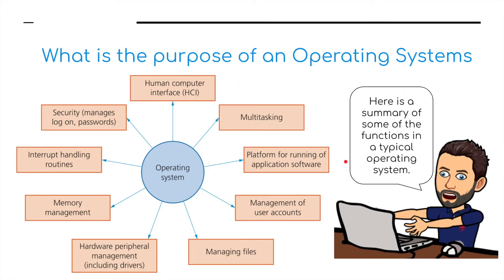So what is the purpose of the operating system? The operating system has many different tasks. First of all, it is a human computer interface — a way of linking the computer so a user can use it. It enables multitasking so you can work on more than one thing at once. It is a platform for running application software. It handles management of user accounts, managing files, managing hardware peripherals including the drivers that enable you to print documents, scan files, and connect your phone to the computer. It also sorts out memory management — the RAM and hard disks — looks after interrupts and interrupt handling routines, and also looks after security, managing logons and passwords to protect your computer from unauthorised access.